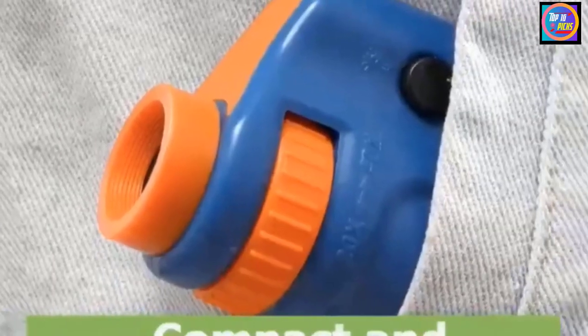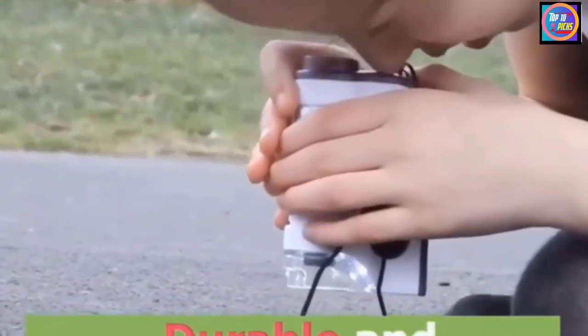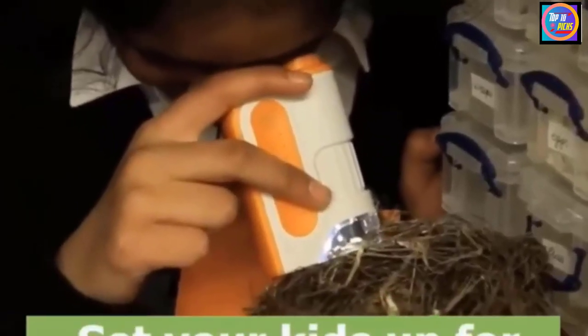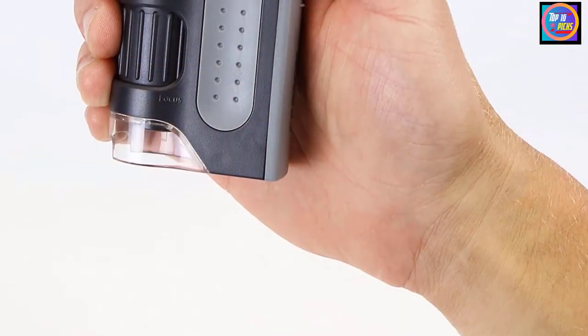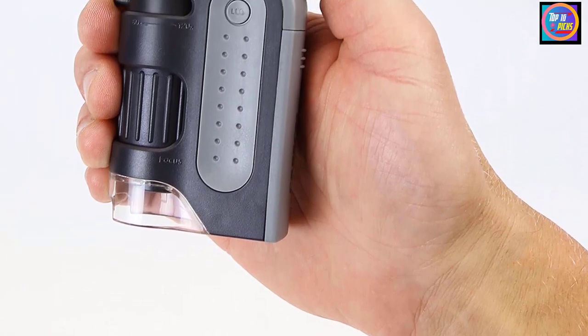To control your focus, a built-in focus setting is easy to use while you're looking at your object and doesn't flicker between settings. Fabric, currency, rocks, and plants show up great under this microscope since these objects don't move, so you don't need to obtain them on slide pieces.